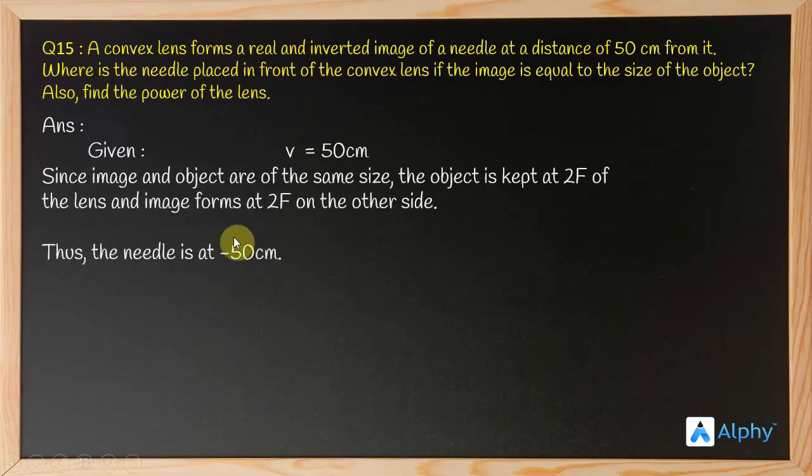We know that the object is at 2F and the image is at 2F, so we know the value of 2F. If we know 2F, obviously we can find F. So 2F is 50, so F is going to be 25 centimeters.